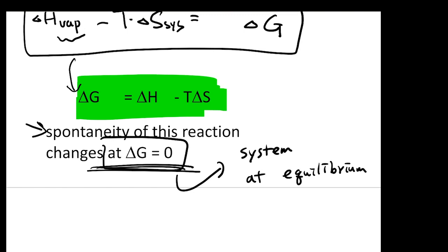Let's refresh our memory. For a spontaneous process, your delta S universe needs to be larger than zero, and your delta G needs to be negative. Your system will be at equilibrium if your delta G equals zero. So those are the three very important physical concepts that you need to have for this chapter.